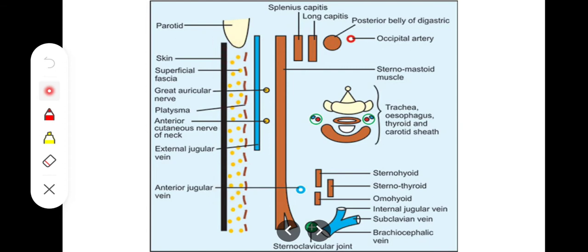Superficial relations are easy: the skin, superficial fascia, and an important muscle — the superficial muscle of the neck, which is the platysma. So the sternocleidomastoid muscle has superficial relations: skin, superficial fascia, platysma muscle, and the external jugular vein, which is the superficial vein of this region.